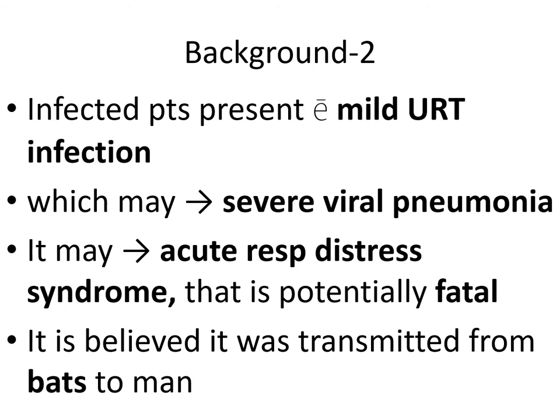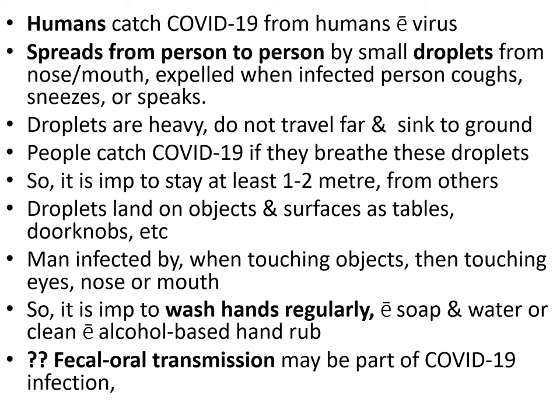Infected patients present with mild upper respiratory tract infection, which may lead to severe viral pneumonia and potentially fatal acute respiratory distress syndrome. It is believed the virus was transmitted from bats to humans. Humans catch COVID-19 from other humans with the virus. It spreads person to person by small droplets from the nose or mouth, expelled when an infected person coughs, sneezes, or speaks loudly. Droplets are heavy, do not travel far, and sink to the ground.